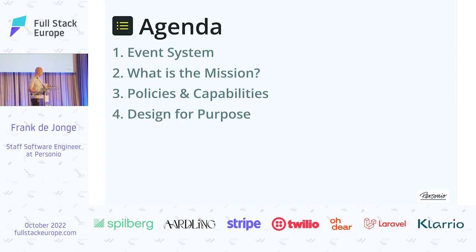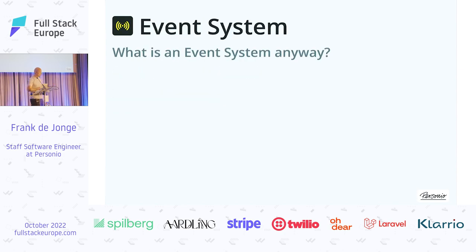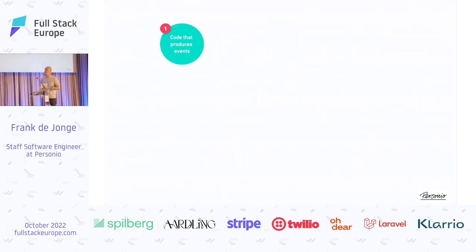What I want to do today is touch on four points. First, we're talking about an event system, so I want to dig into what I actually mean by that. Then we're looking at the business context — what kind of context are we actually designing this in? From that business context, we're going to distill a couple of policies and capabilities that we want to design for, setting the design goal. And then design for that purpose.